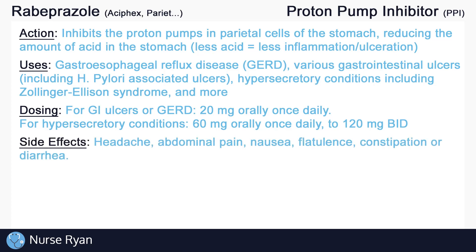PPIs generally have relatively few side effects. The most common include headache, abdominal pain, nausea, flatulence, constipation, and diarrhea. These side effects typically occur less than 5% of the time.